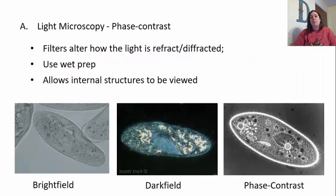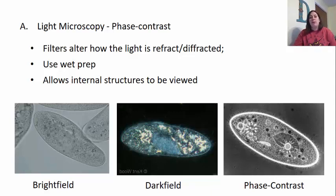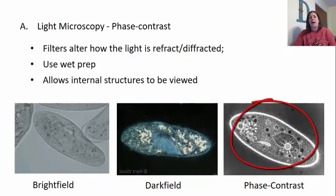Another light microscope is called the phase contrast. It uses filters to alter how light is going to be refracted and diffracted — how the light is bent. You can use a wet prep with this as well. It allows internal structures to be viewed in a little more detail. Here I give you a comparison: you have the bright field, the dark field, and the phase contrast — all of the exact same organism — to show how each type focuses on different structures.